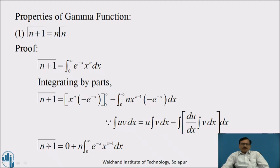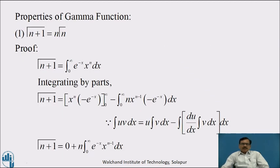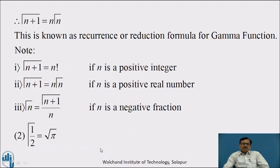Therefore, Γ(n+1) equals: putting the upper limit, as x tends to infinity, x^n / e^x tends to 0, so the upper limit term is 0. Similarly, putting x equal to 0, that is the lower limit, the value of this term is also 0. Taking minus times minus gives plus, and taking n common, we get n · ∫₀^∞ e^(−x) · x^(n−1) dx. Again, we are getting the definition of the Gamma Function, therefore Γ(n+1) = n · Γ(n).